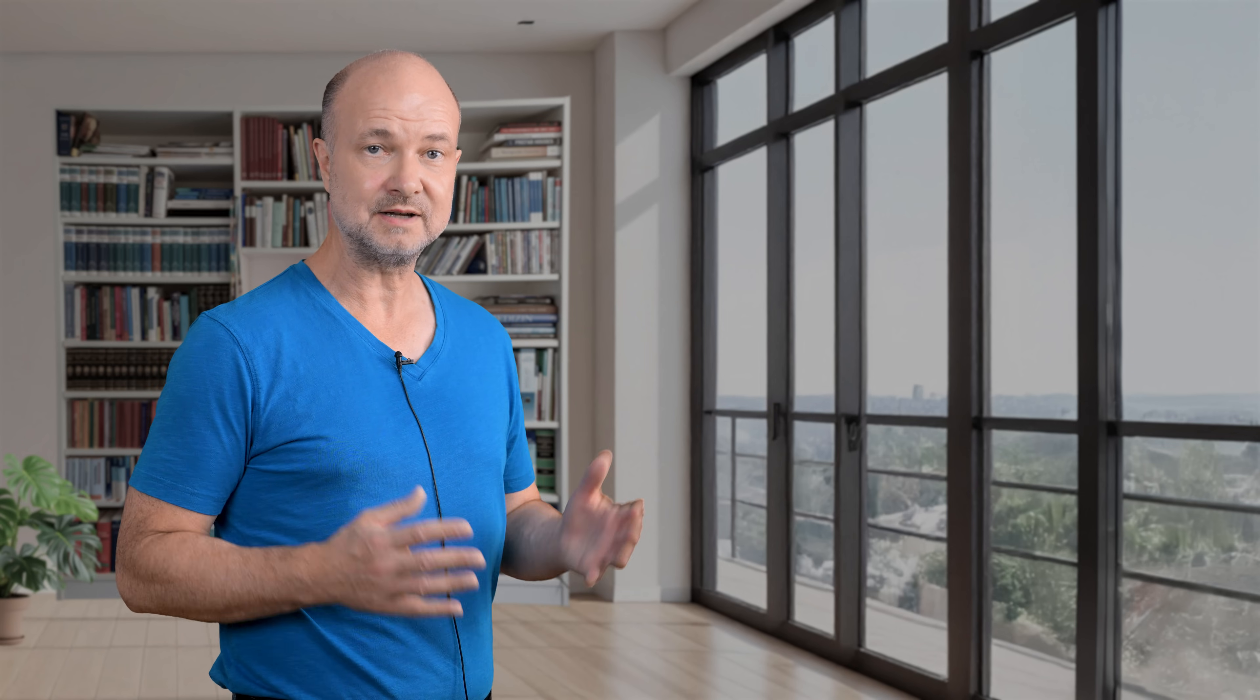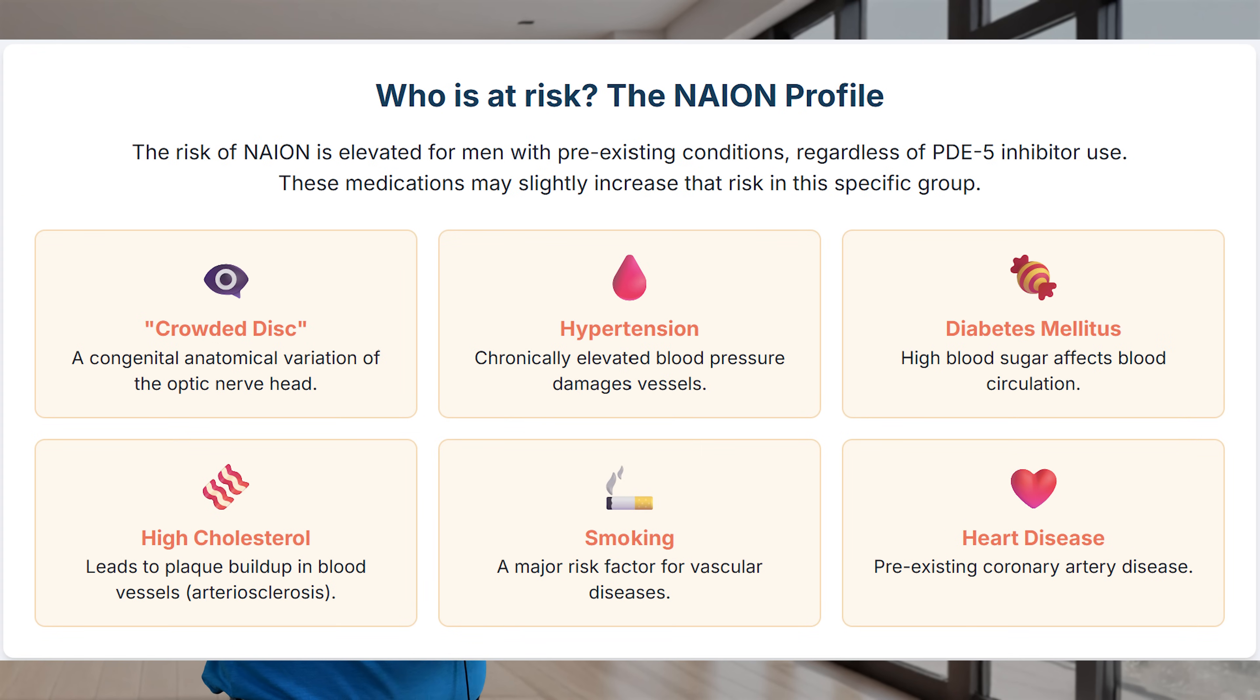Who is at higher risk? It's not every man. The risk clusters in men with pre-existing problems: diabetes, high blood pressure, heart disease, smoking and certain eye structures like a crowded optic disc. In other words, men who already have compromised blood flow to the eye may be more vulnerable.